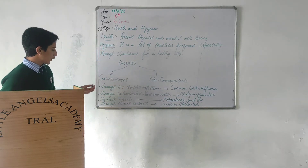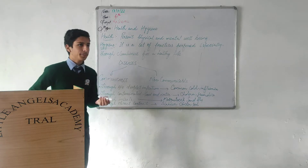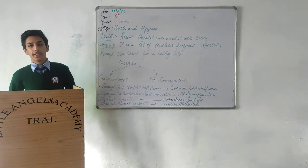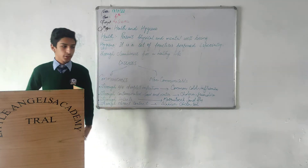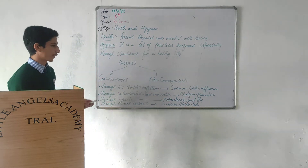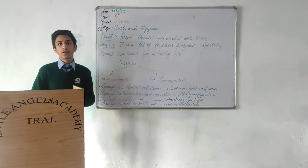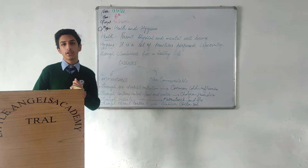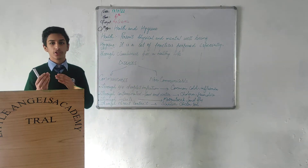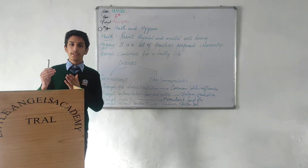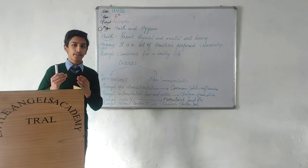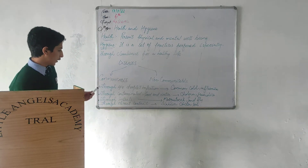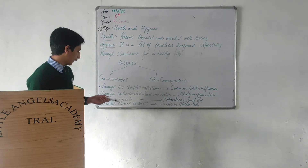Next comes through contaminated food and water. When any person eats contaminated food or water, he gets infected. Next comes through insects: when any insect sits on uncovered food, it transfers germs onto the food and when we eat that food we get infected. Some examples are mosquito and sand fly.